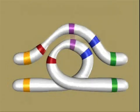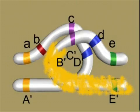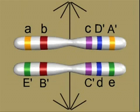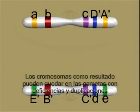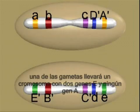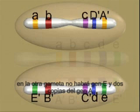Crossing over can occur in the inverted region. Chromosomes produced after crossing over in the inversion have duplicated and deficient regions of DNA. One of the resulting meiotic products will contain a chromosome with two copies of gene A and no copies of gene E, and another product will have a chromosome with no copies of gene A and two copies of gene E.